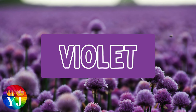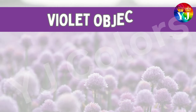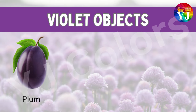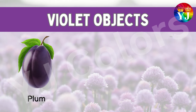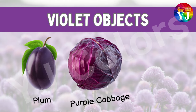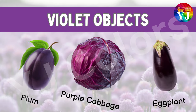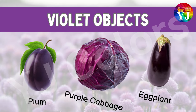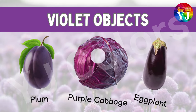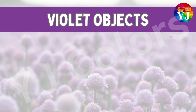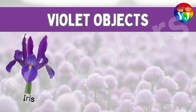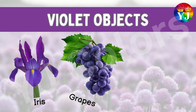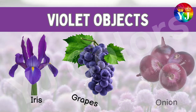Violet. Examples of violet: Plum, Cabbage, Eggplant, Iris, Grapes, Onion.